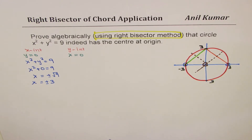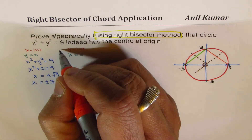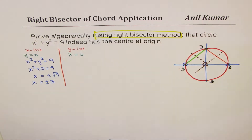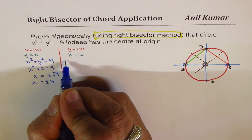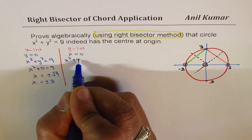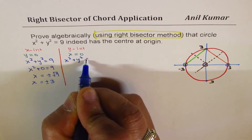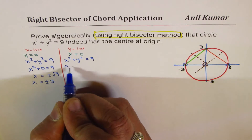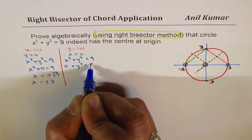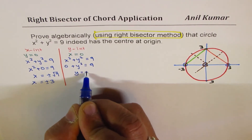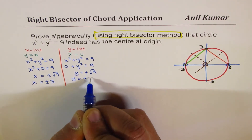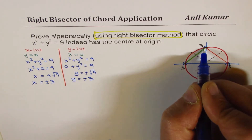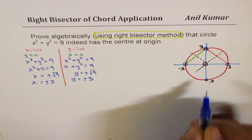Similarly, for the y-intercept we place x = 0 into x² + y² = 9. We get y² = 9, so y = ±√9, giving y = ±3. So we get these intercept points.